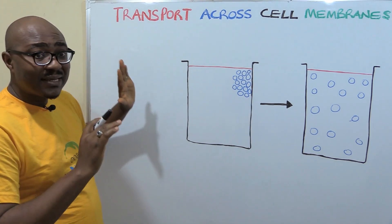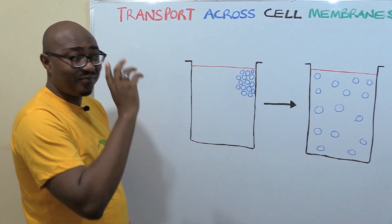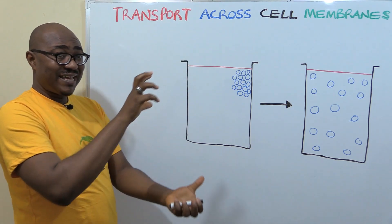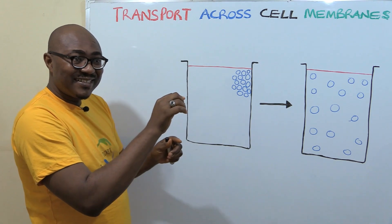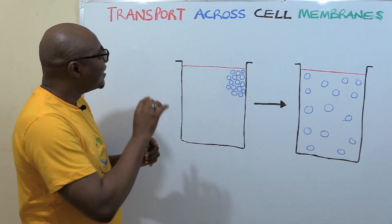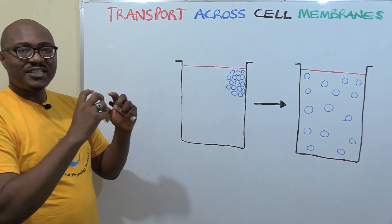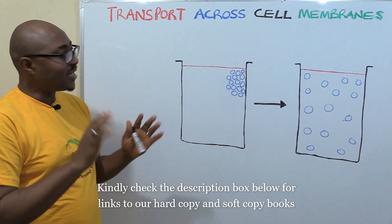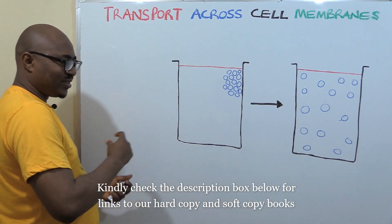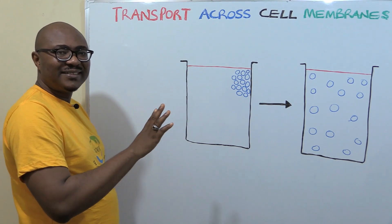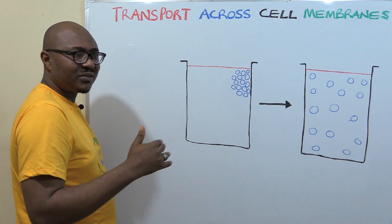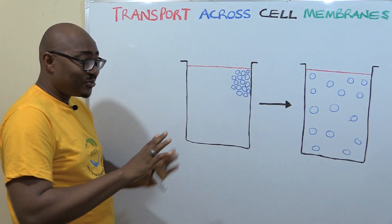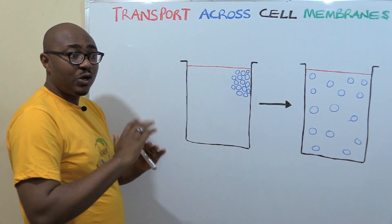Today we're going to be dealing with a topic that is foundational and vital to physiology: transport across cell membranes. It's one of those underlying principles of physiology — from the lecture titled 'Seven Secrets of Physiology.' One of those principles states that there is controlled exchange across cell membranes and between compartments. Also remember that physiological processes are dictated by the laws of physics and chemistry.